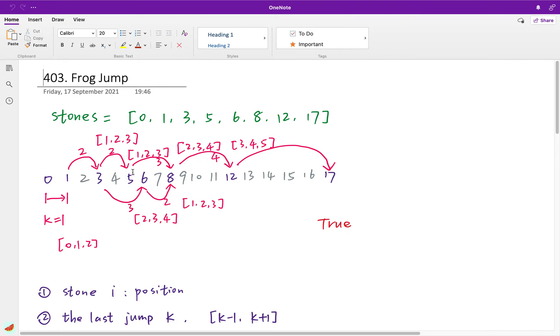Here you can see we jump 2, so the next jump can be 1, 2, 3. We jump 3, we get 8. If last jump we jump 3 here, then we get 6. So the next jump can be 2, 3, or 4. Then we jump 2, we get 8.